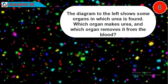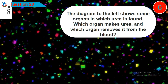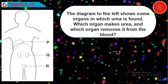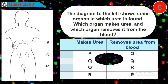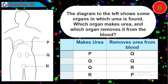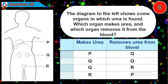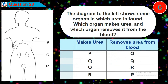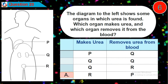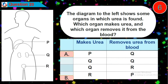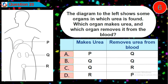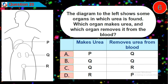Question 20: The diagram to the left shows some organs in which urea is formed. Which organ makes urea and which organ removes it from the blood? Is it option A, B, C, or D?